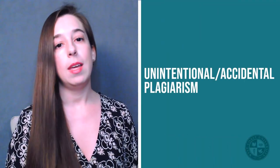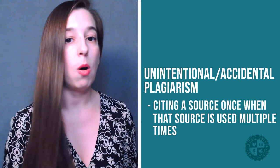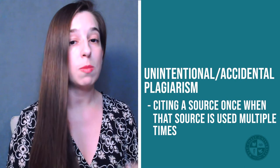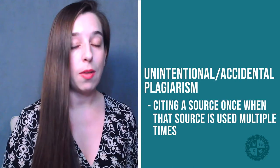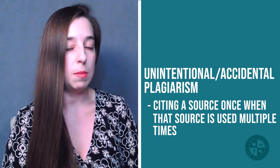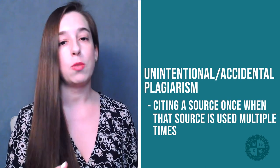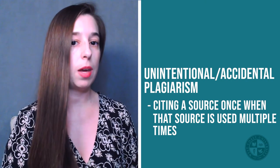Another form of accidental plagiarism is when you cite a source only one time in a whole paragraph, even though you use that source multiple times — more than one sentence throughout the paragraph took information from your source, but you only cited it once at the beginning or once at the end. That's not going to cut it because we need to know every time when you're taking something from somewhere.